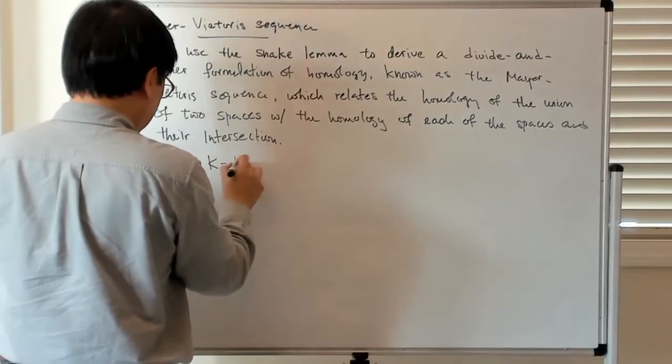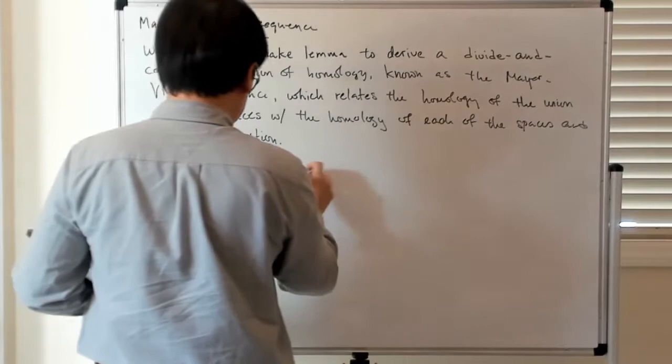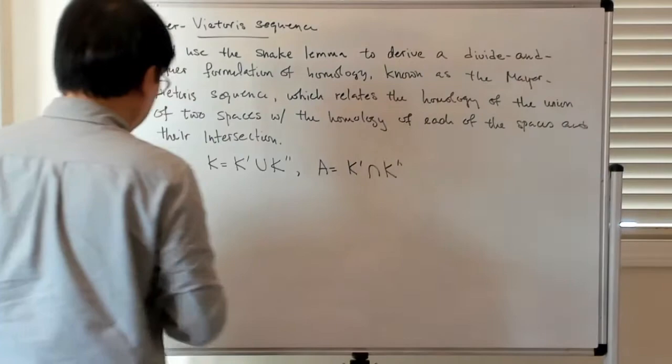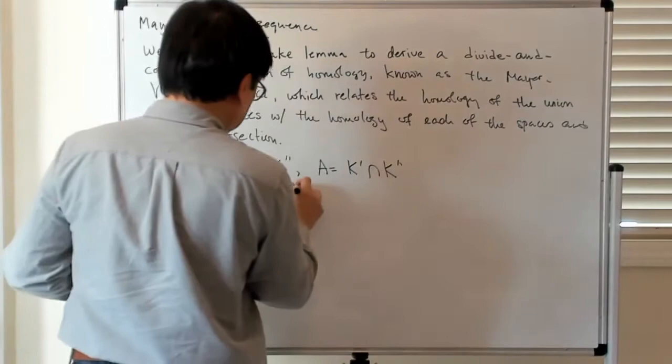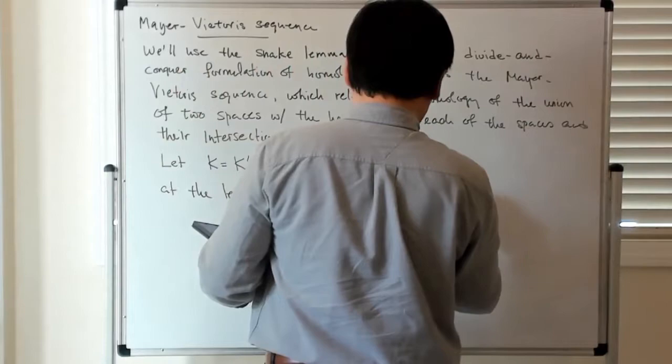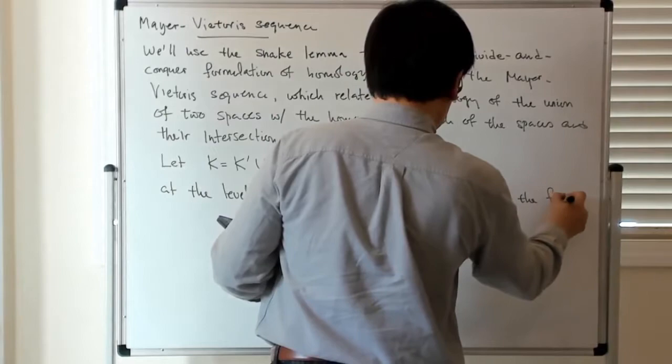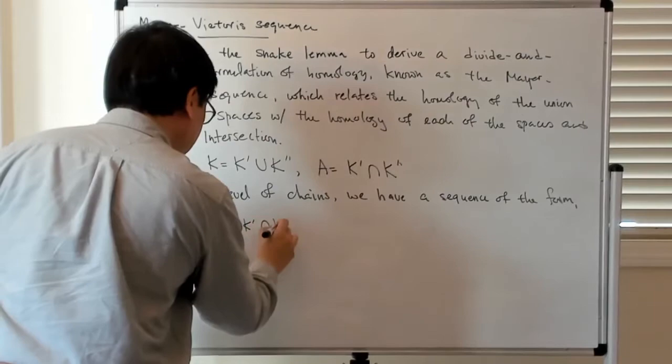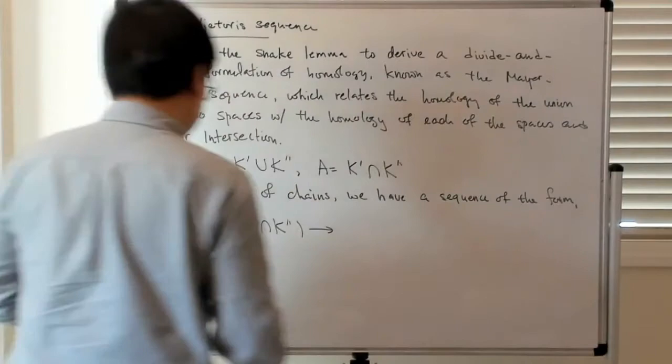So let K be K prime union K double prime, and let A be its intersection, K prime intersect K double prime. So then the idea is that at the level of chains, we have a sequence of the form C_p of K prime intersect K double prime gets embedded into two copies,